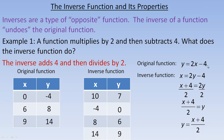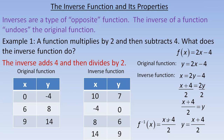The symbol for the inverse is f⁻¹, which looks like f to the power of negative 1. Written in function notation, if the original is f(x) = 2x - 4, then the inverse is f⁻¹(x) = (x + 4) / 2.